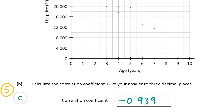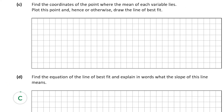Now let's look at part C, which is also worth five marks. Here we have to find the coordinates of the point where the mean of each variable lies, plot that point, and then hence or otherwise draw the line of best fit. So we need to find the mean of the x-values and the mean of the y-values.